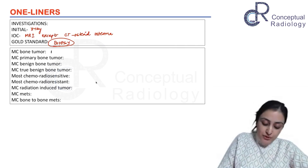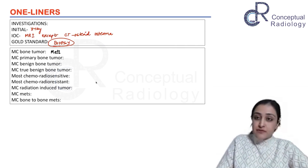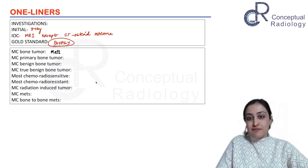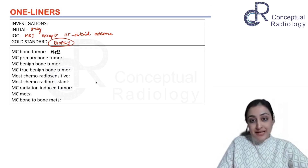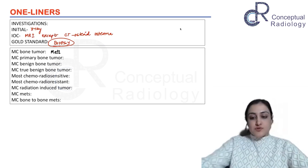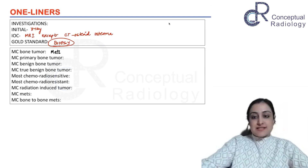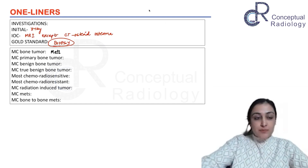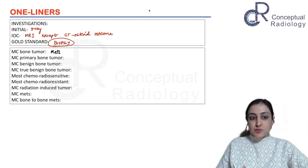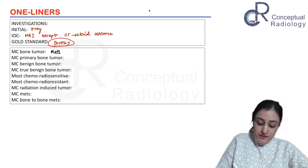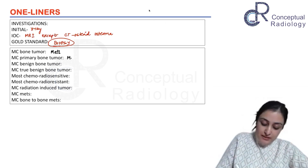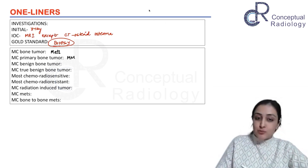As far as one-liners: the most common bone tumor is always metastasis — this holds true for liver, brain, lung, everywhere. Metastases are more common than primary lesions. As far as primary bone tumor is concerned, it is multiple myeloma which is the most common primary bone tumor.